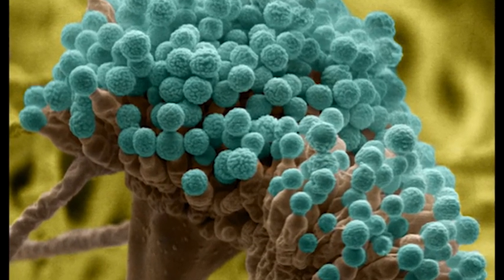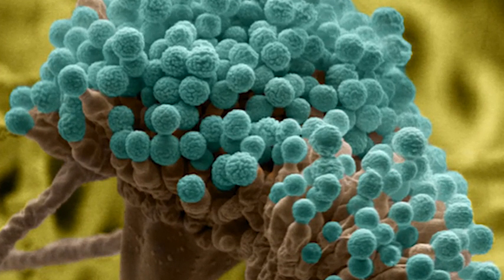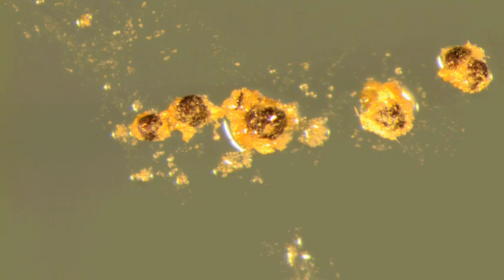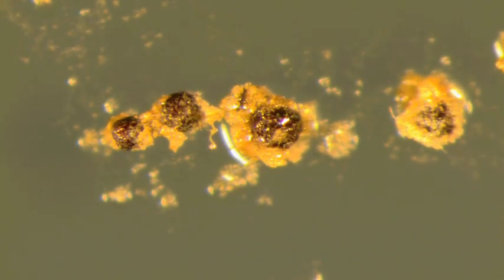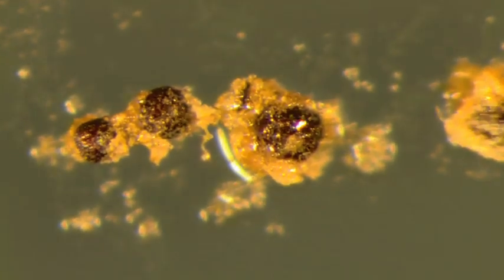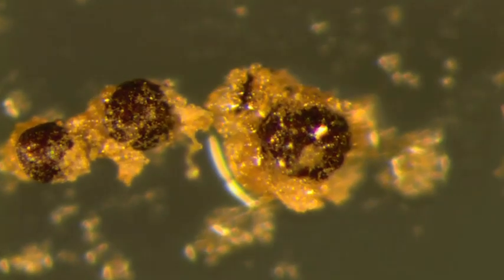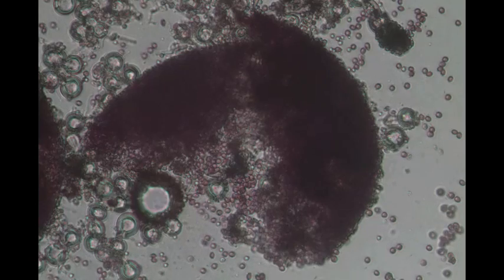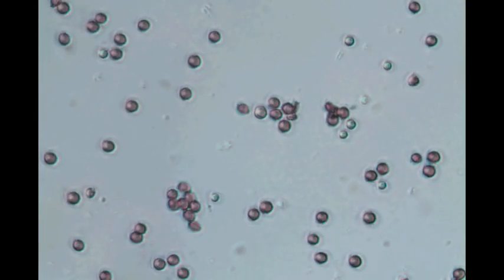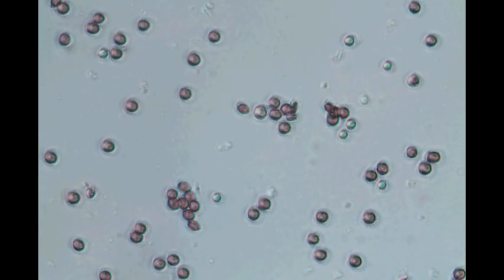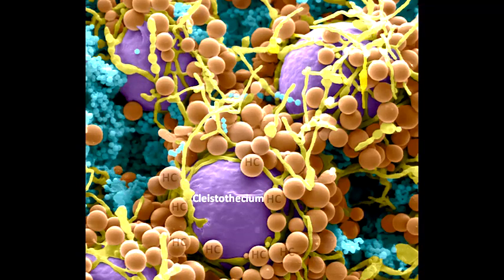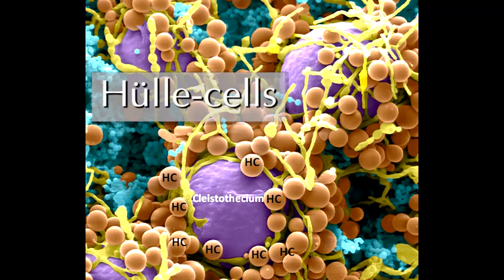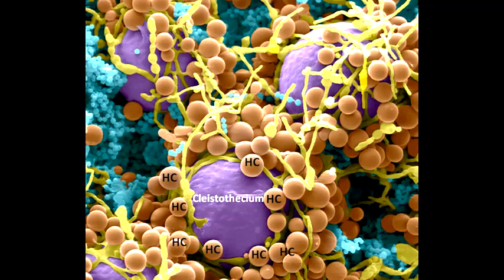Conidia spores are disseminated in nature. Incubation in darkness results in the formation of sexual structures called cleistothecia. A cleistothesium is a globose, completely closed fruiting body that contains sexually produced ascus spores within sac-like structures called asci. A developing cleistothesium is surrounded by a globose cell encasing whose function is to protect and nurture the growing cleistothesium.